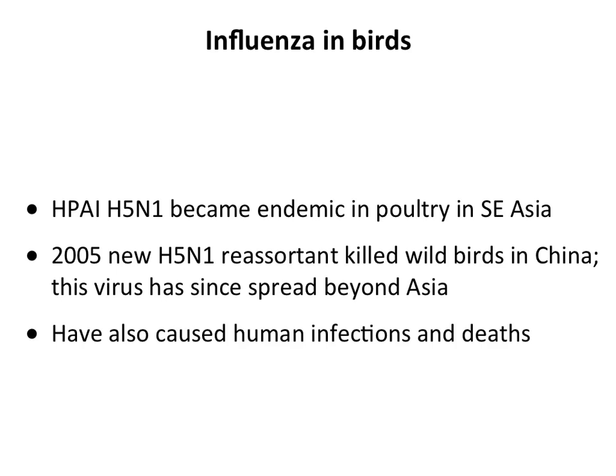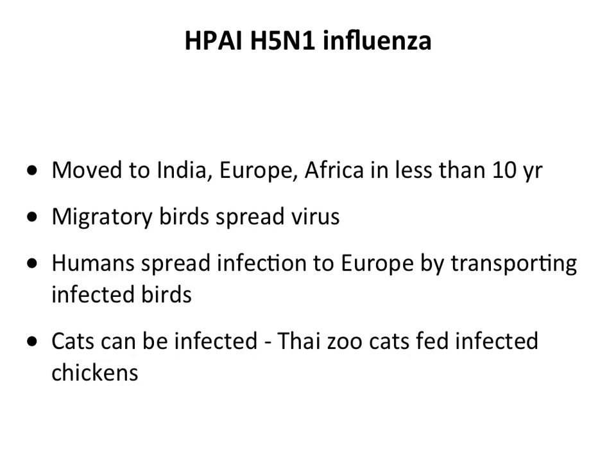The virus reappeared in poultry and wild birds in 2001 and 2002. Eventually this high pathogenicity H5N1 became endemic in poultry throughout Southeast Asia. In 2005, a new reassortant emerged in China that started to kill wild birds — previously outbreaks were confined to domestic poultry. At that point the virus began to spread beyond Asia. Within 10 years it moved from Asia to Europe and Africa, spread by migratory birds and by humans transporting birds.